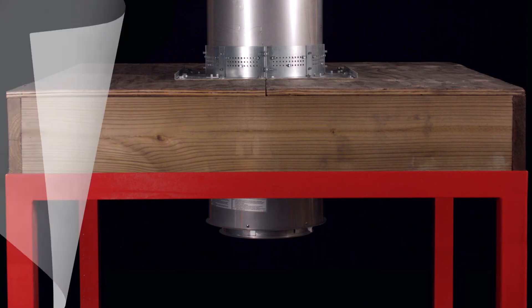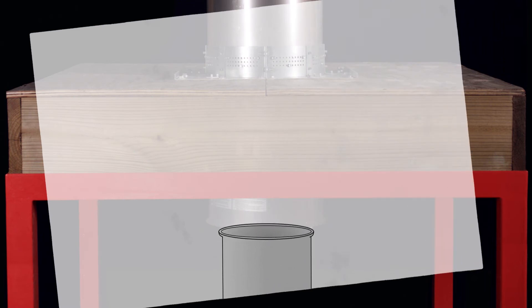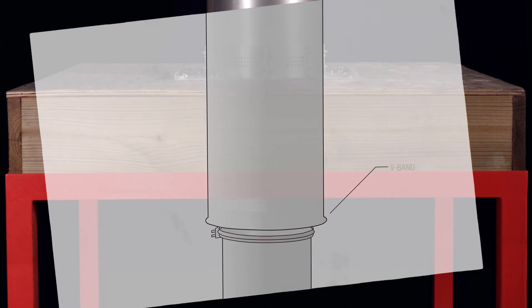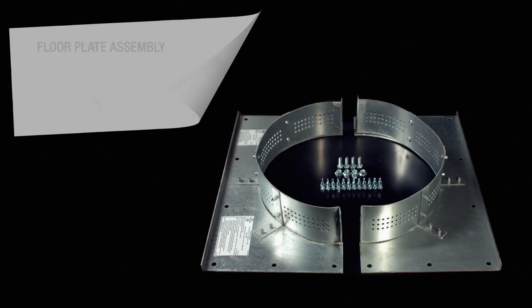After the duct sections beneath the floor have been properly installed, begin by assembling the duct section in the floor opening using v-bands to connect the duct below. After securing the duct, it's time to assemble the floor plates.